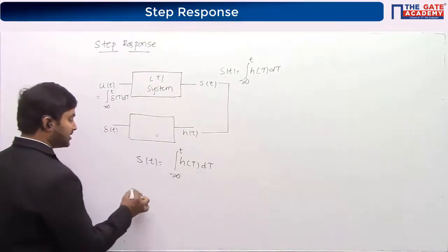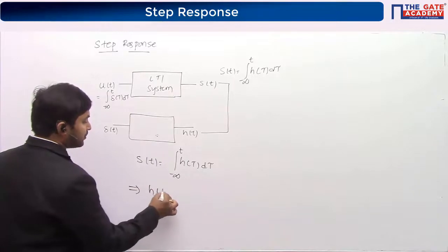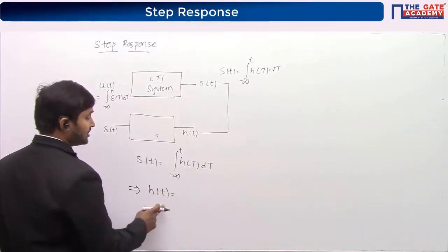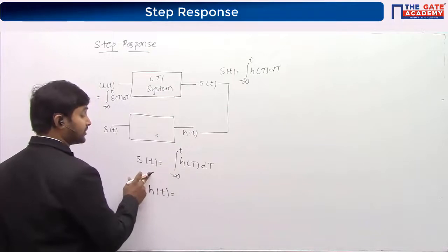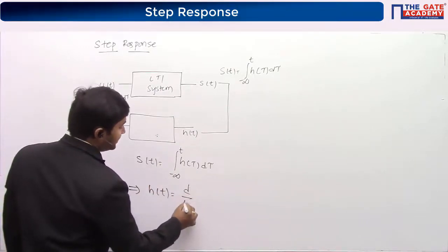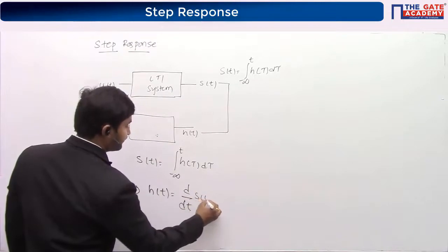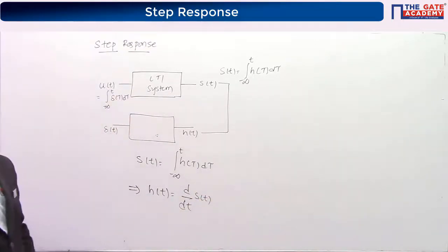In the other way, h(t) can be expressed in terms of s(t): h(t) is equal to d/dt of s(t). So differentiating the step response gives you the impulse response.